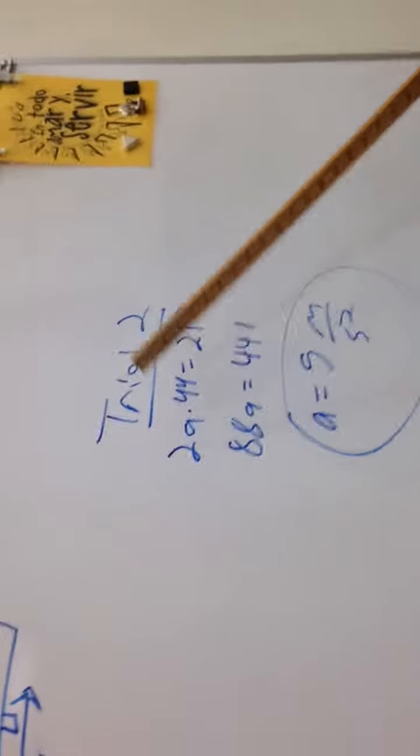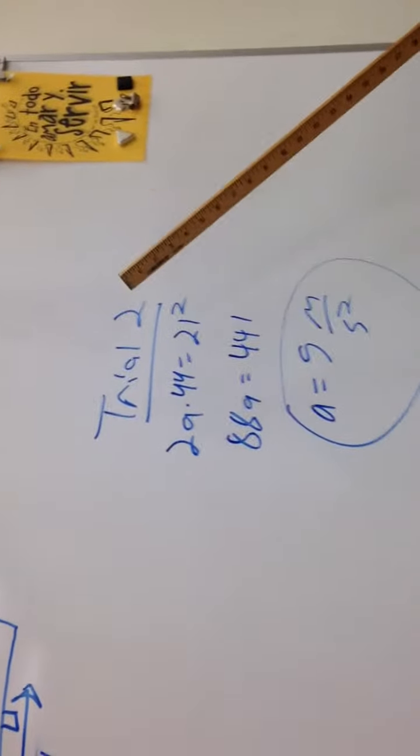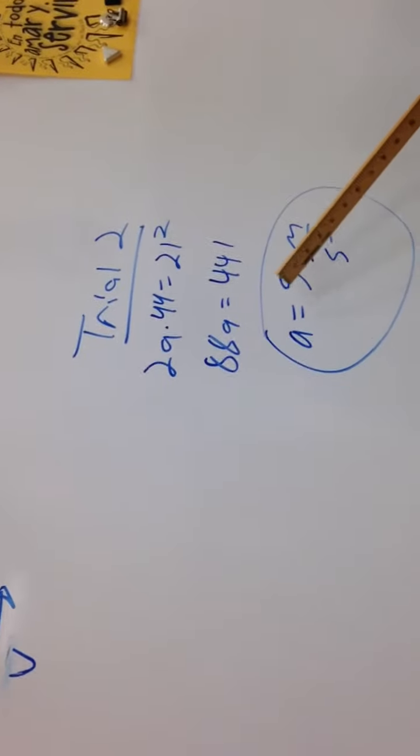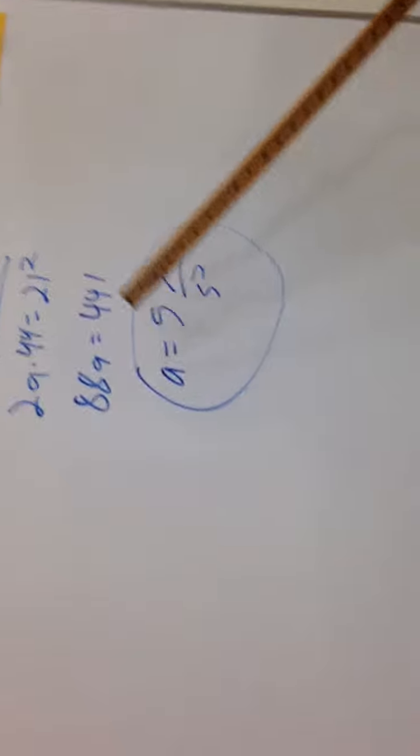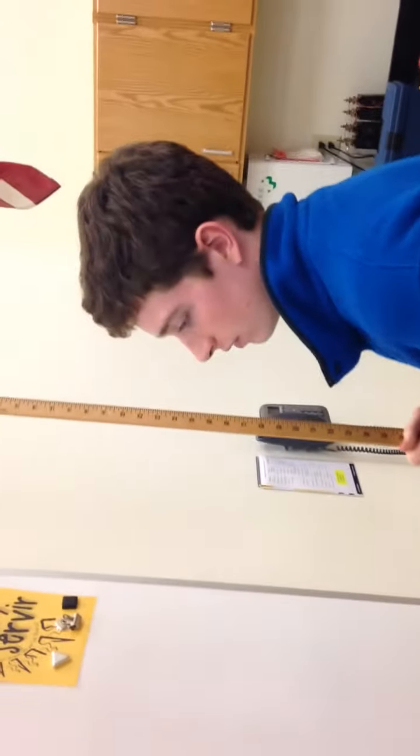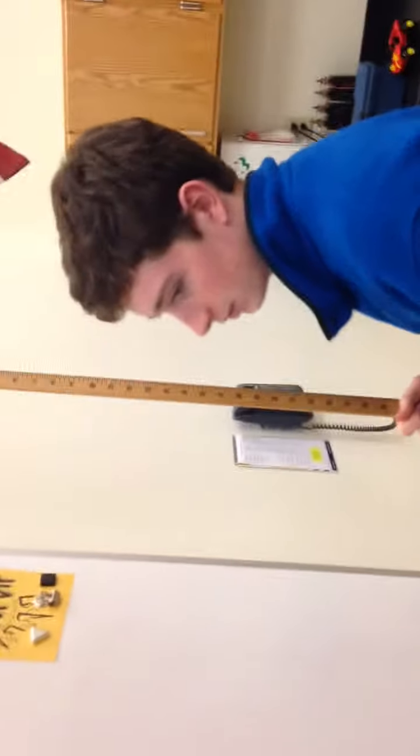Trial 2: We have 2A times 44 equals 21 squared. After calculation, we get acceleration equals, again, 5 meters per second squared, due to the fact that significant figures are relatively low and limited.